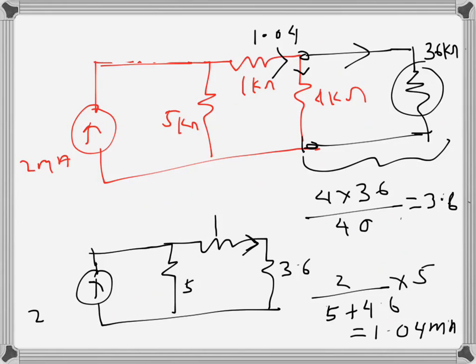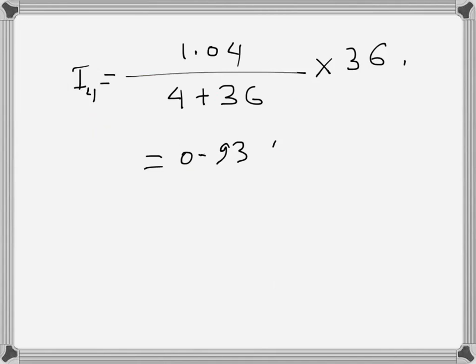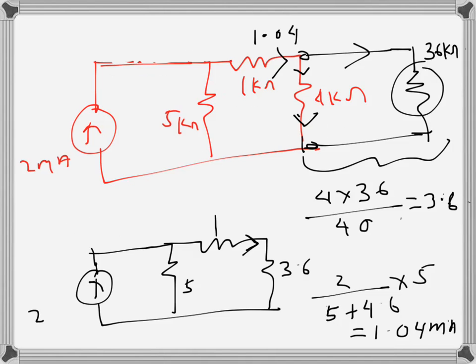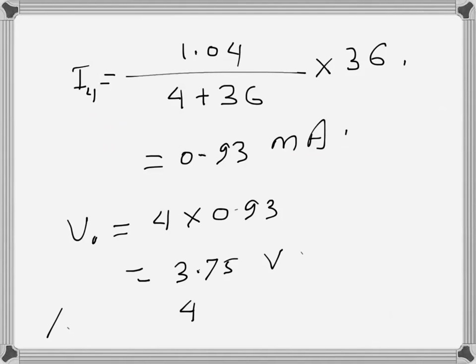The 1.04 milliamps is divided between the 4 kilo ohm and 36 kilo ohm resistances. Applying the current divider rule, the current through the 4 kilo ohm branch is 1.04 times 36 over (4 plus 36), which gives 0.93 milliamps. The voltage the meter reads is 4 times 0.93, which equals 3.75 volts. The percentage error is (4 minus 3.75) over 4 times 100 percent, which is 6.25 percent.